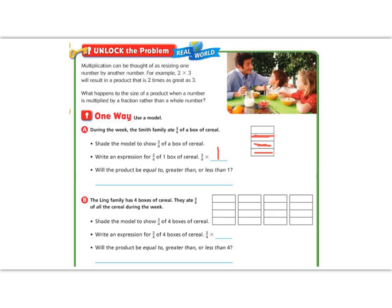Will the product be equal to, greater than, or less than 1? In order for it to be equal to 1, we would have to multiply it by 1, and we're multiplying it by less than 1. In order for it to be greater than, we would have to multiply it by greater than 1. So our answer is that it's going to be less than 1. You can see that in our picture — we did not use a whole box, we used less than 1.